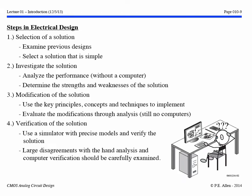The steps in electrical design begin with the selection of a solution, examining previous designs and selecting something simple. The second step is to investigate the solution — analyze the performance of the proposed solution without using a computer, and determine its strengths and weaknesses. Then move on to any necessary modifications using the key principles, concepts, and techniques of analog circuit design, and evaluate those modifications through analysis — still not using computers or simulation.